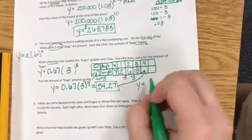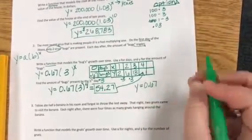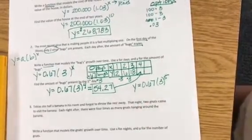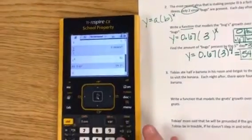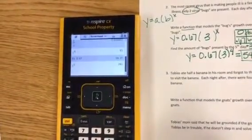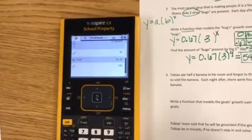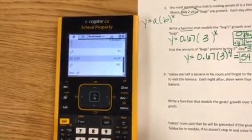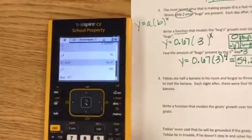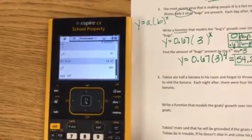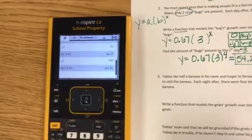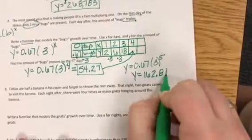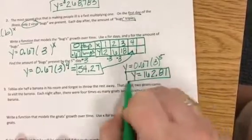So 0.67 times three to the fifth power now. So three—back to my calculator—three to the fifth power, now that I'm going to be doing it the correct way. I get 243 to multiply it by the starting point, 0.67. It doesn't matter if you take 0.67 or just 0.67, it's the same thing. You're going to multiply it, and I end up with the answer of 162.81 bugs after five days.